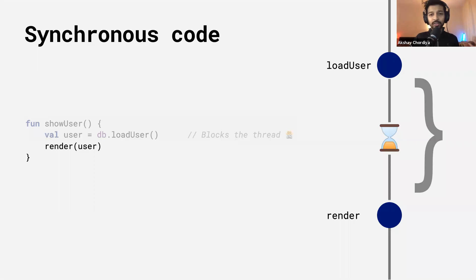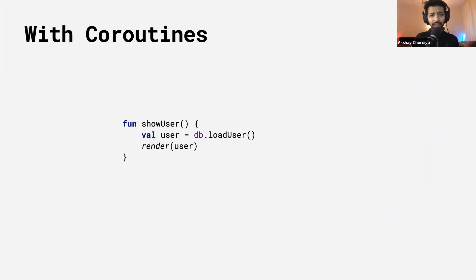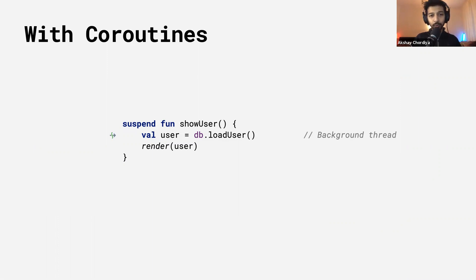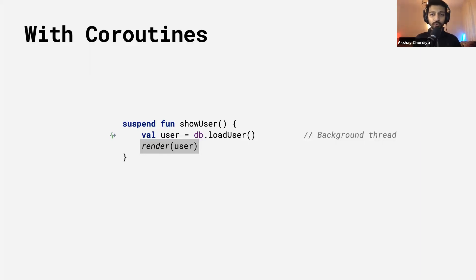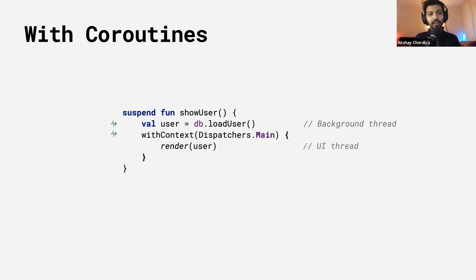Let's look at how we can solve this problem using coroutines. Starting with the original synchronous 'show user' function, first we mark it with the suspend keyword. You also need to mark 'load user' as suspend, since we want it to run on the background thread. By marking it as suspend, it will already run in the background thread. But there's a problem — the render function needs to be called from the UI thread, since whenever we touch the view hierarchy, it must be done from the UI thread. So we use a function called 'withContext', which allows switching the thread inside the suspending block. We change from background thread to the main thread, then call the render function. That's pretty much how you convert a synchronous function into an asynchronous one using coroutines.